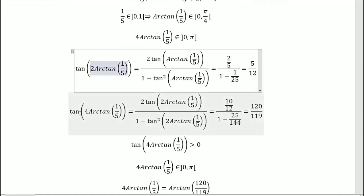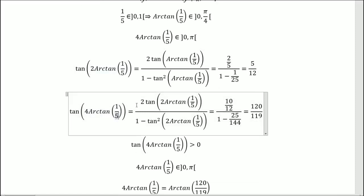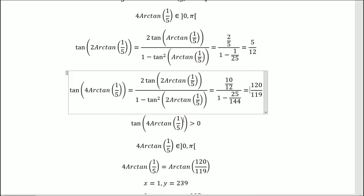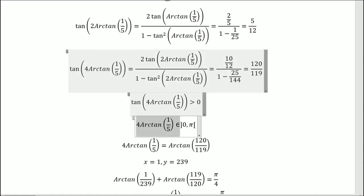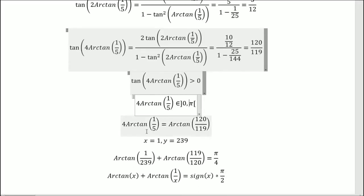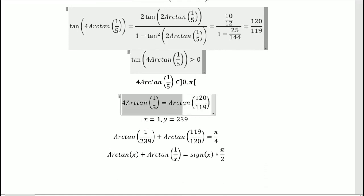We do the same thing with tangent of 4 arctangent 1 over 5. We get this, we simplify, and we get this. We get that this is superior to 0. We get that this is between 0 and pi as we said earlier. We know that this is equal to this because we've proved it. So we can, because we applied arctangent to both sides. So we take this and we apply arctangent. So the arctangent of tangent will be equal to identity. So we get this equality here.